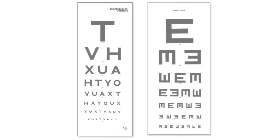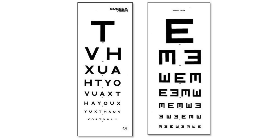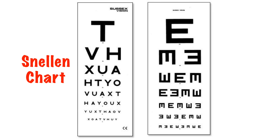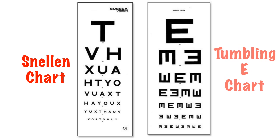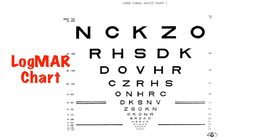There are lots of different charts out there, but probably the most common you will see outside the specialist centre will be the Snellen chart, or if someone cannot read English, the tumbling E chart, where you ask the person to point at which way the letter E is facing. We will leave the Logmar chart to those in ophthalmology.